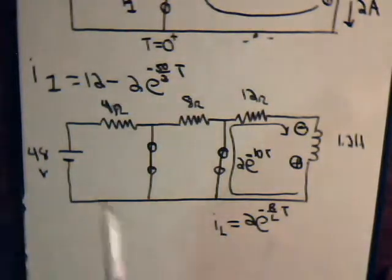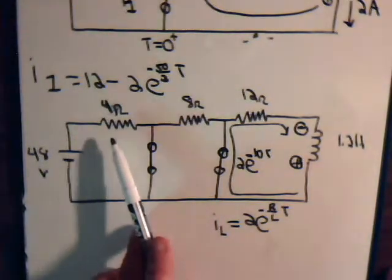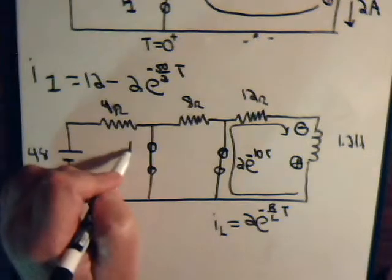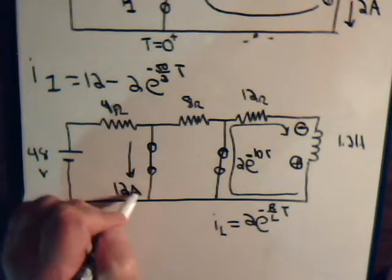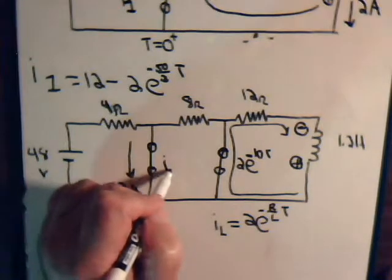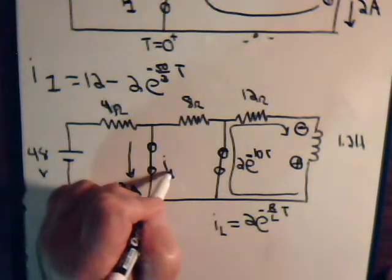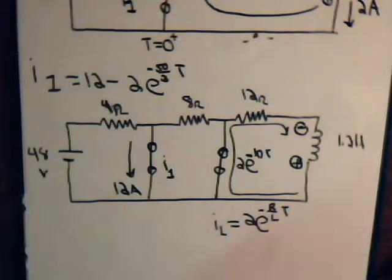Then over here, we would just again have 48 divided by 4, 12 amps. So you'd be tempted to think, okay, so I1 is just 12 amps, there's nothing to subtract off from it. But no, that's not the correct way of thinking of it.